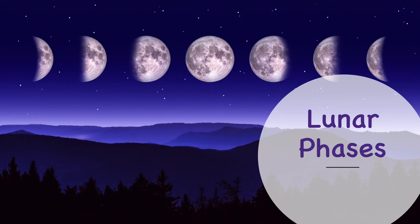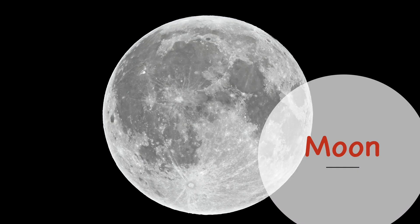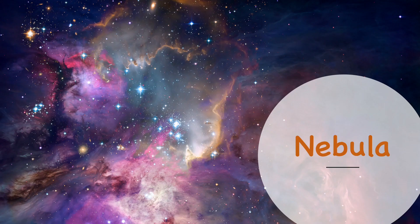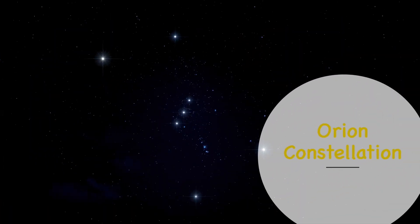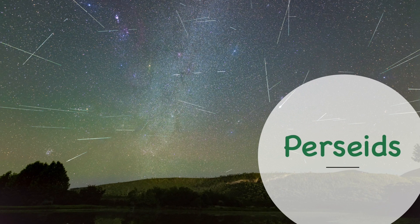L is for lunar phases. M is for moon. N is for nebula. O is for Orion constellation. P is for Perseids.